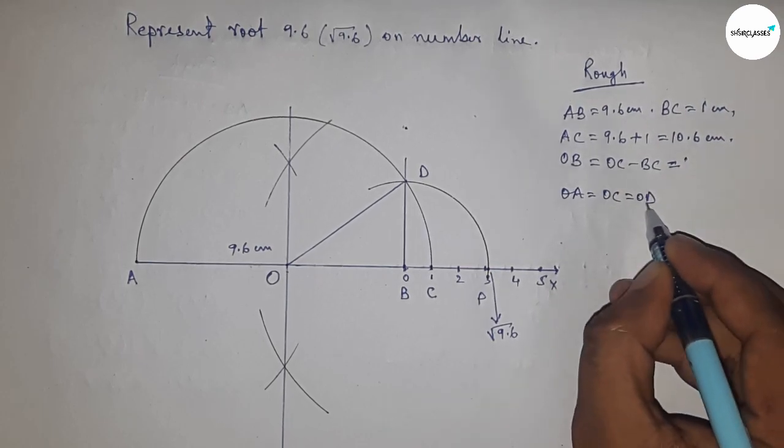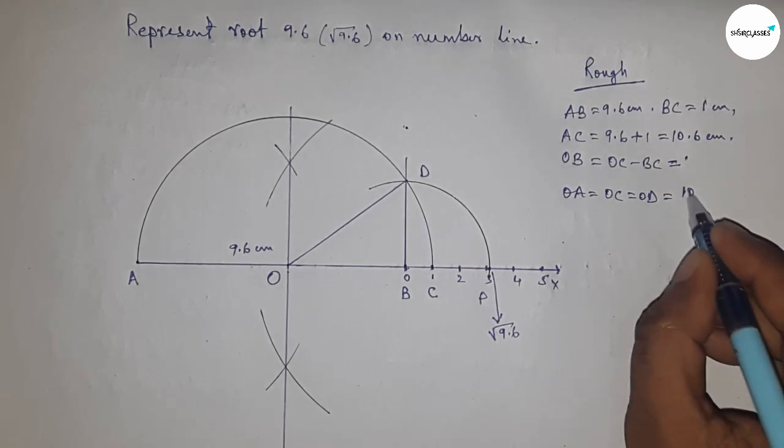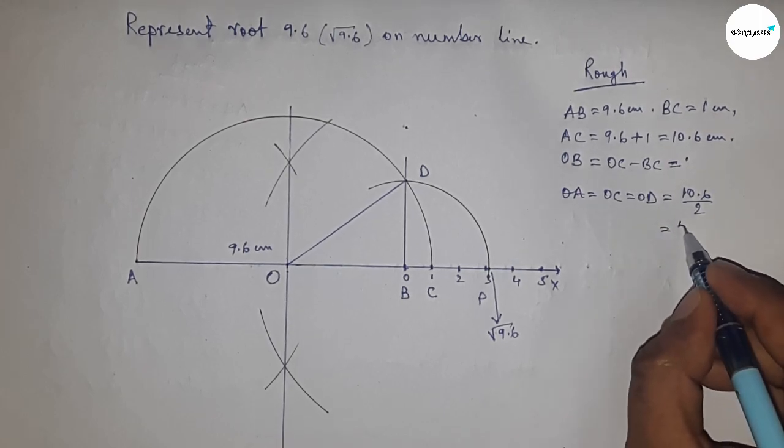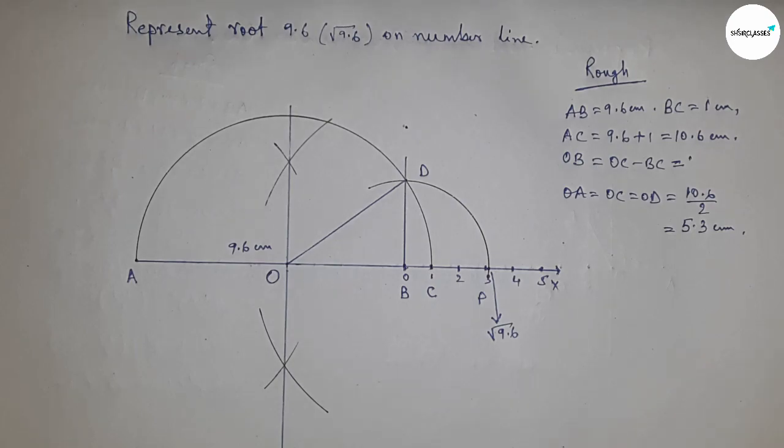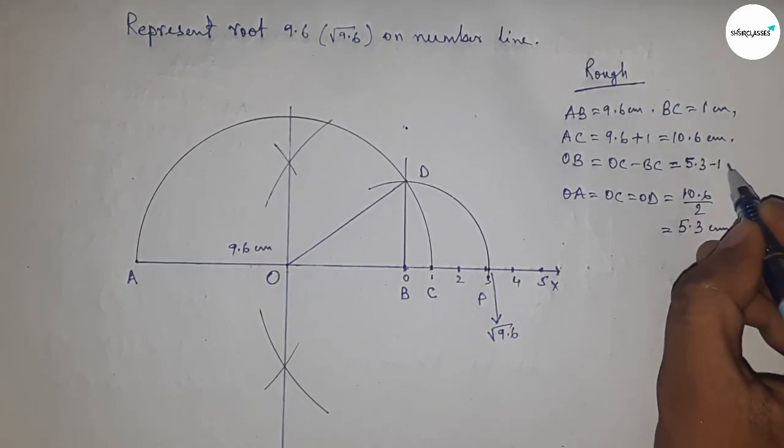The radius OA, OC, and OD equal 10.6 divided by 2, which equals 5.3 centimeters. Putting this value here, OB equals 5.3 minus 1, which is 4.3 centimeters.